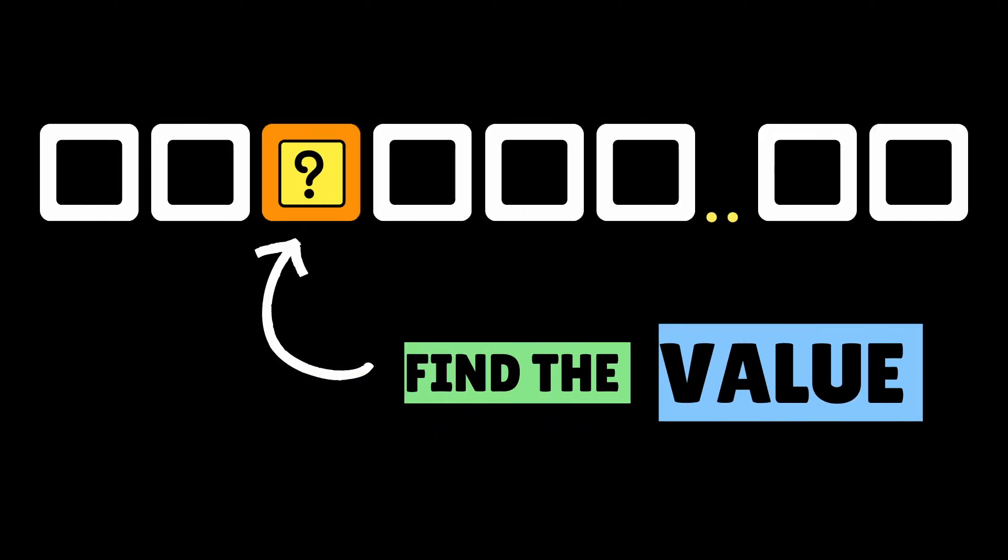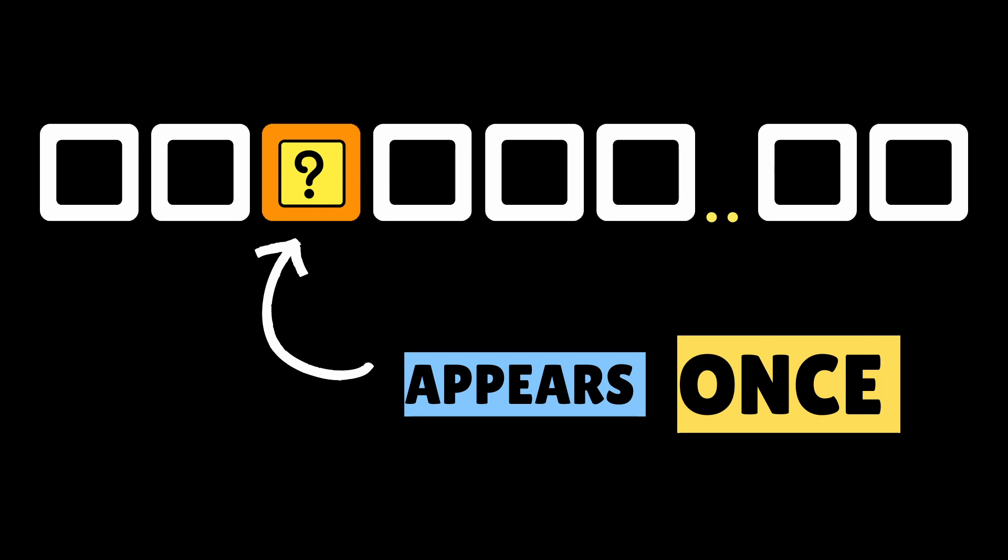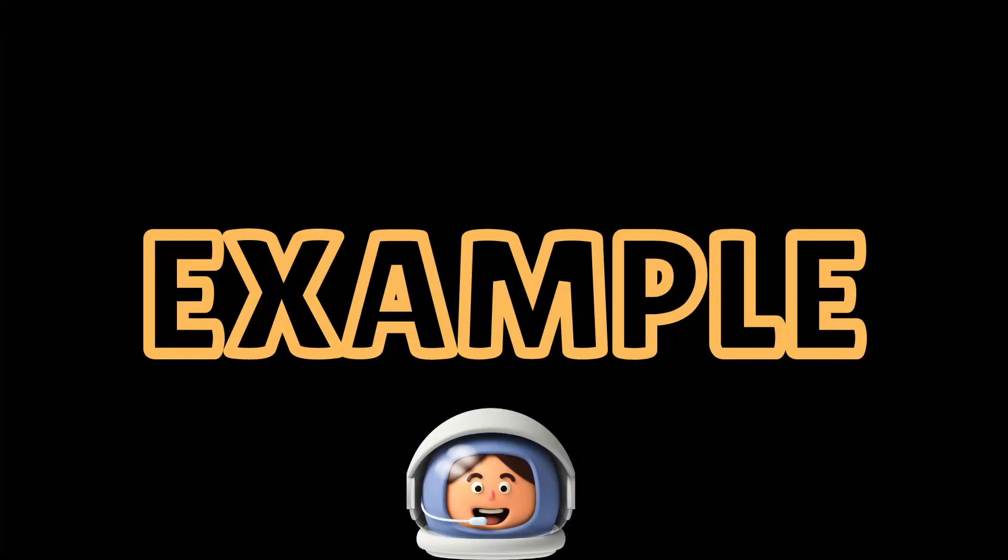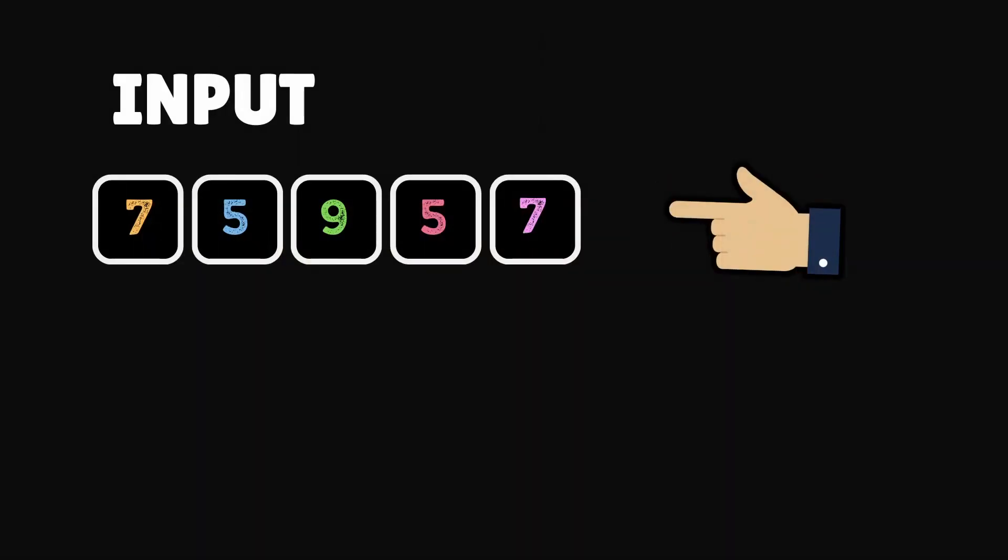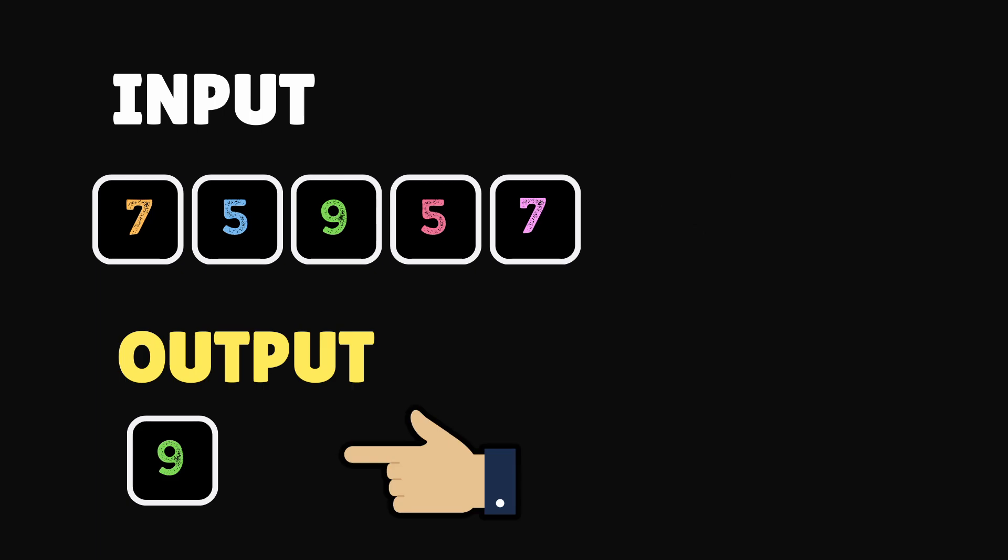Let's take an example for a better understanding. Here's an array which consists of five elements: 7, 5, 9, 5, and 7. The output from our design circuit must be 9. Up to this point, the question seems to be easy, but here's the twist.